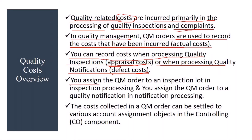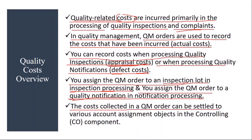You assign the QM order to an inspection lot during inspection processing, and you assign the QM order to a quality notification during notification processing. For normal inspection costs, you assign the order to the inspection lot, and for defect costs during the quality notification process, you assign the order to the quality notification. The costs collected in the QM order can then be settled to various account assignment objects in the controlling component, such as a cost center — this is handled by the finance and controlling team.